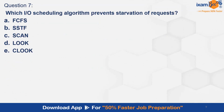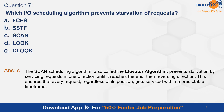Question 7. Which I/O scheduling algorithm prevents starvation of requests? A. FCFS. B. SSTF. C. SCAN. D. LOOK. E. C-LOOK. And the correct answer is C — SCAN. The SCAN scheduling algorithm, also called the elevator algorithm, prevents starvation by servicing requests in one direction until it reaches the end, then reversing direction. This ensures that every request, regardless of its position, gets serviced within a predictable timeframe.